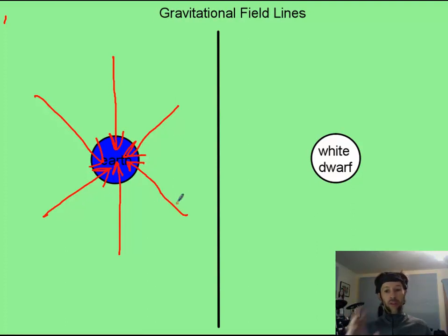And going in like this. Now for your white dwarf, pause it and try and draw on your gravitational field lines, as you would for the white dwarf, relative to how we did for Earth here.